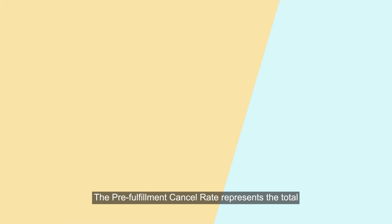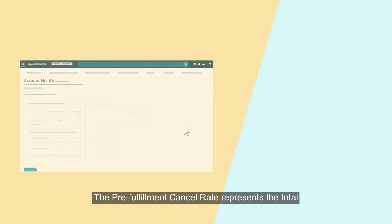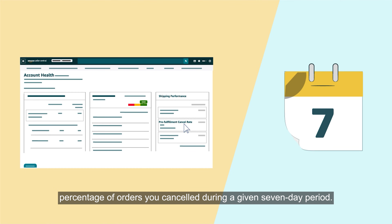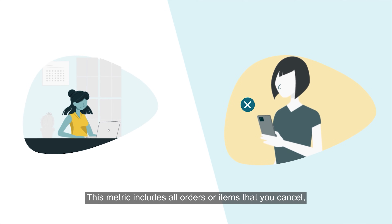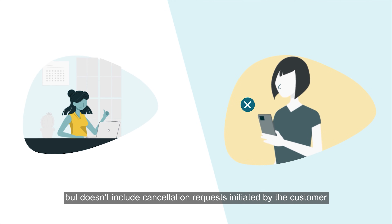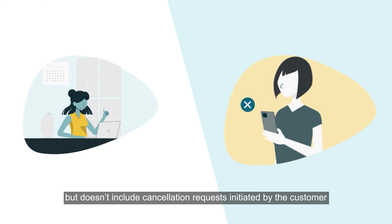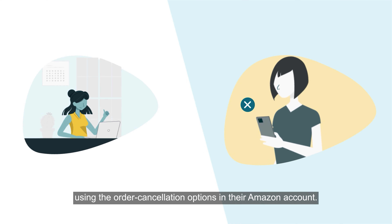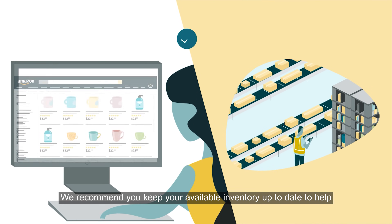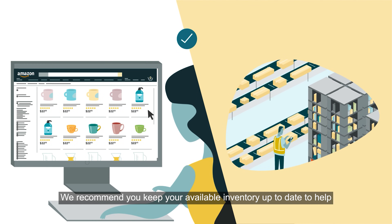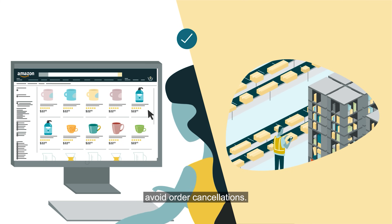The pre-fulfillment cancel rate represents the total percentage of orders you canceled during a given seven-day period. This metric includes all orders or items that you canceled, but doesn't include cancellation requests initiated by the customer using the order cancellation options in their Amazon account. We recommend you keep your available inventory up to date to help avoid order cancellations.